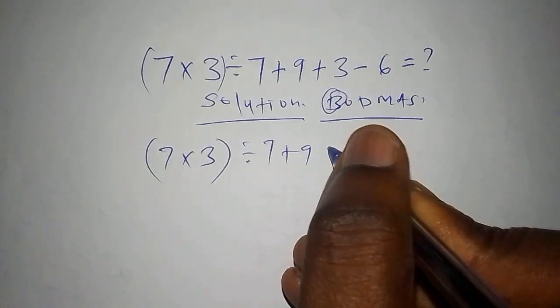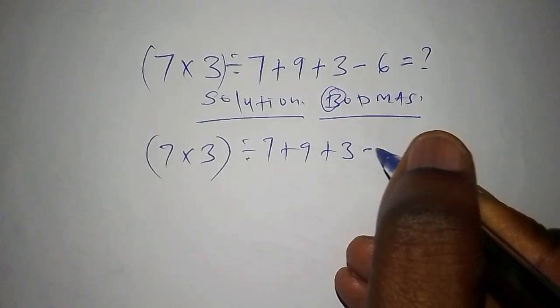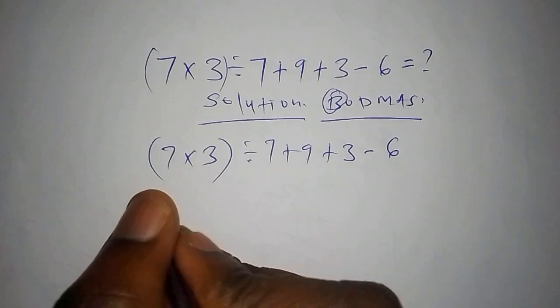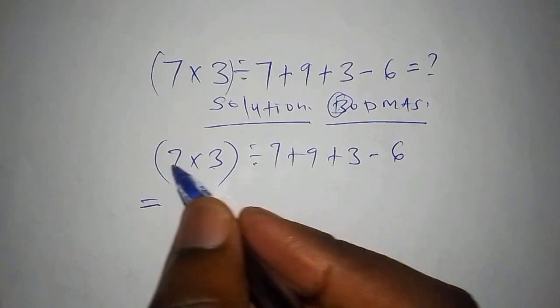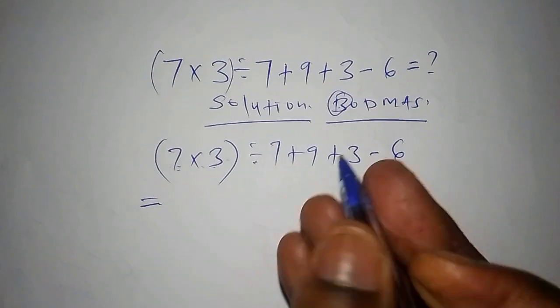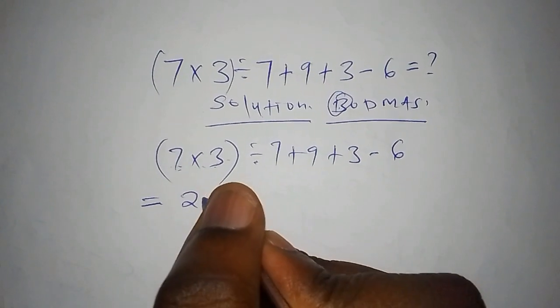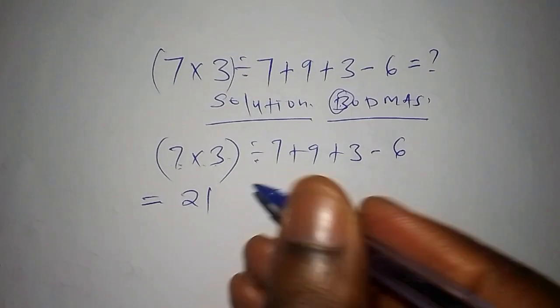So this one equals - we have the bracket, so we're going to multiply the bracket first. 7 multiply by 3, that is 21. Then 21, now we have divide by 7, add to 9, add to 3, subtract from 6.